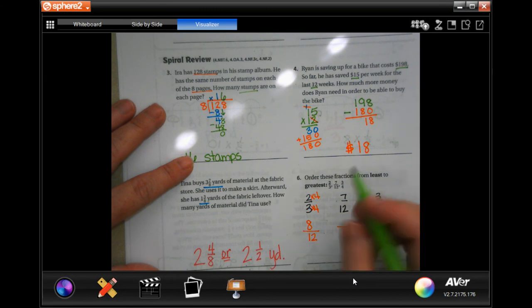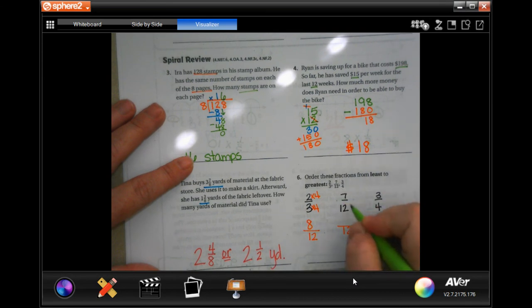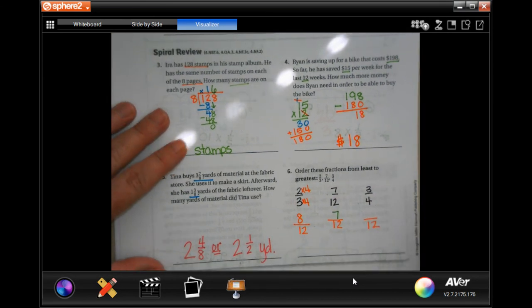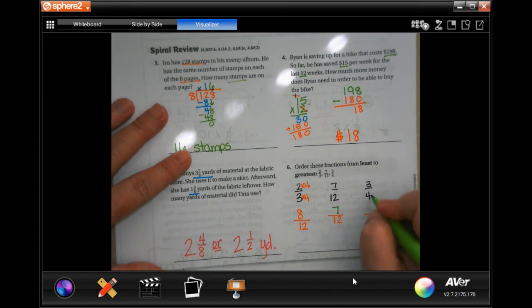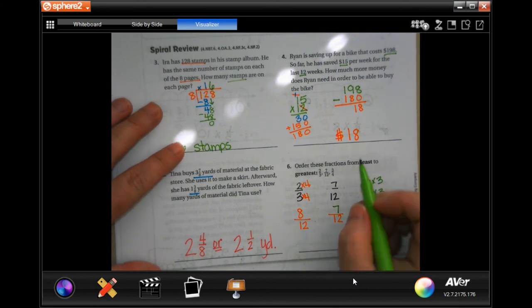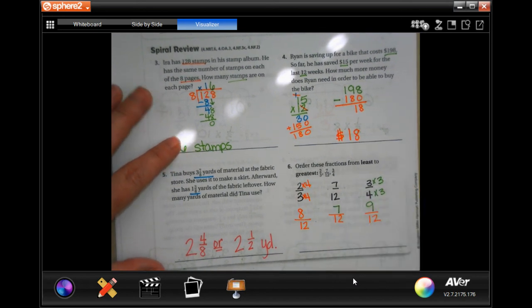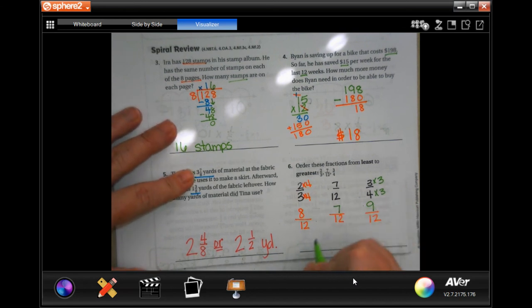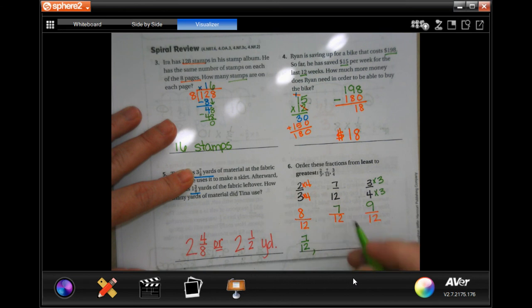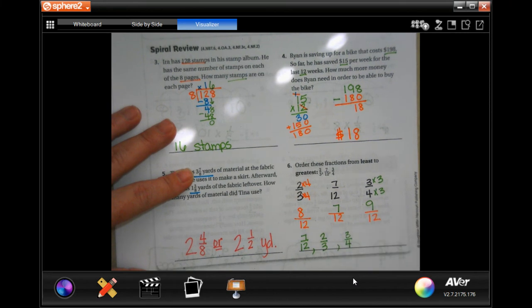Okay, in order to get 12 to 12, we didn't have to do anything, so I'm just going to copy that seven down. In order to get four to 12, we have to multiply it by three. I'm going to multiply this up by three and get nine. So now from smallest to biggest, least to greatest, we're gonna have seven twelfths, two thirds, and three quarters.